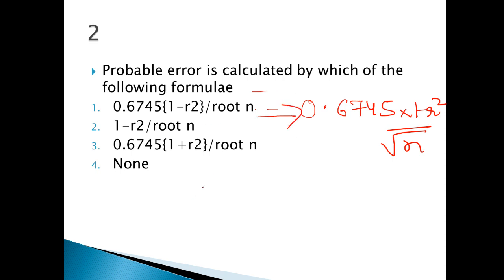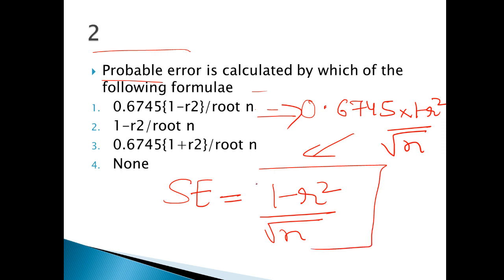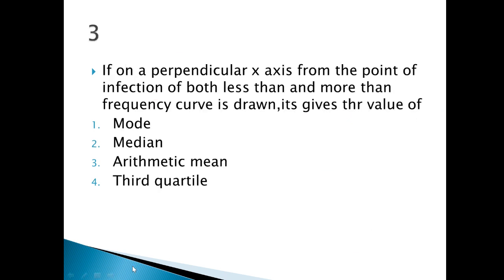So guys, this is the correct option. When I talk about probable error, this is the answer. But if I talk about standard error, the answer will be (1 minus r squared) upon under root n. So these things you need to remember — very important to know.